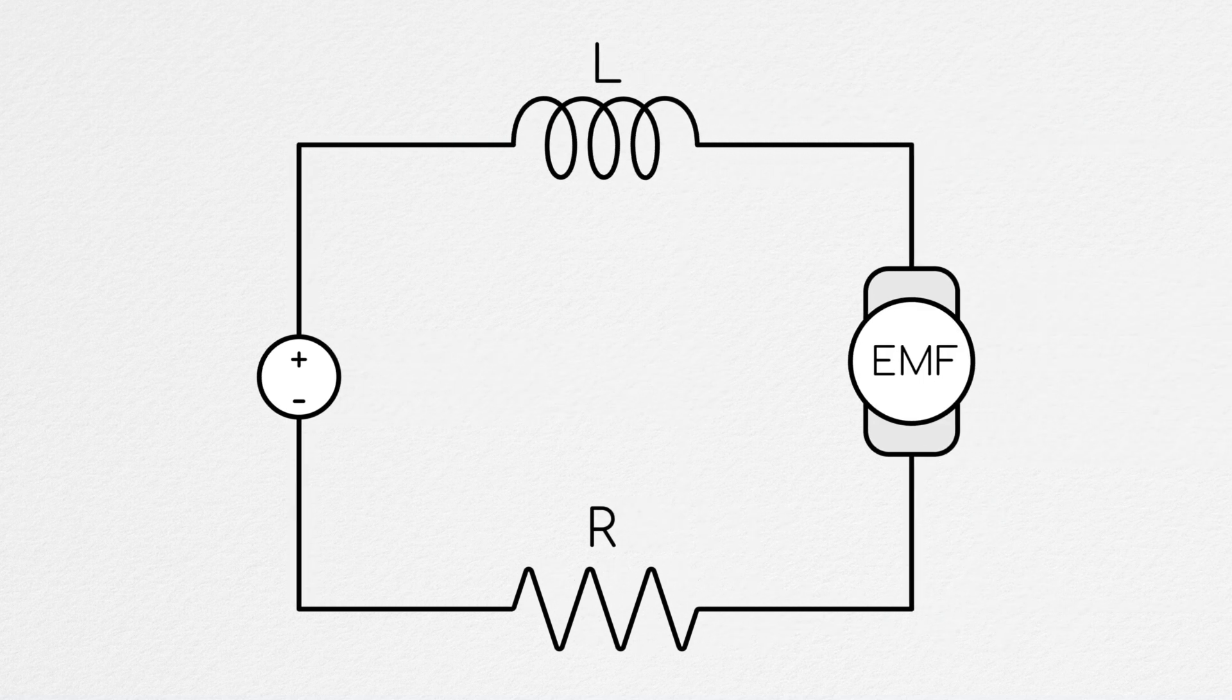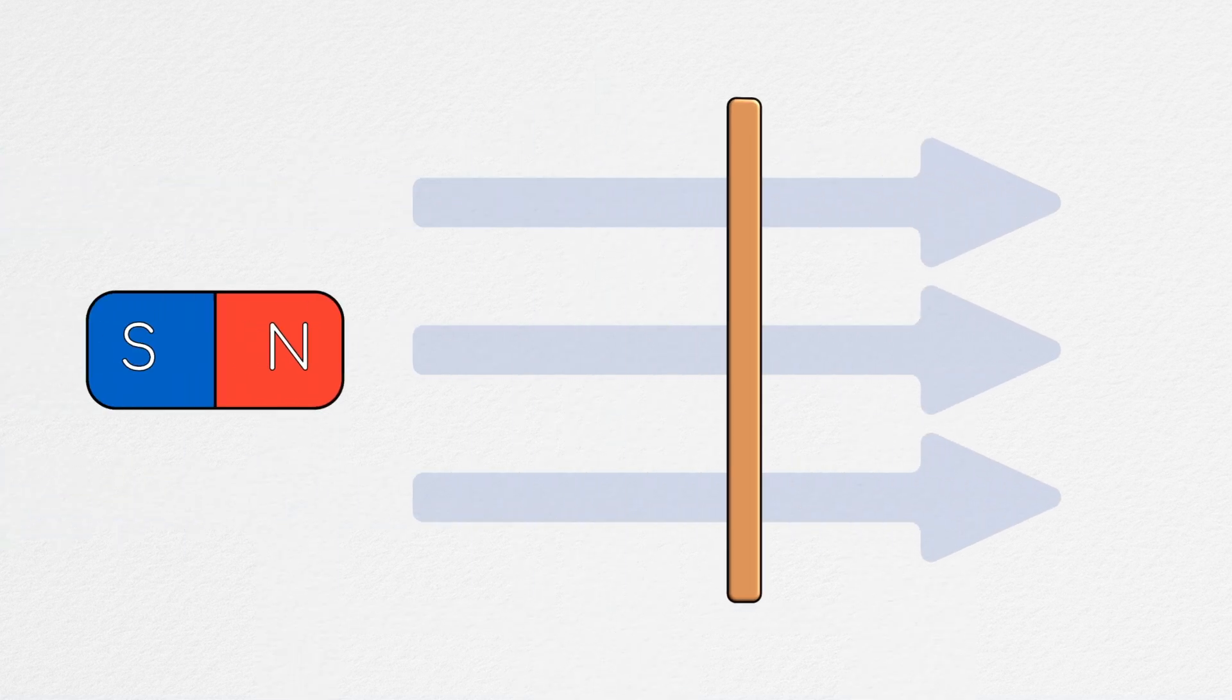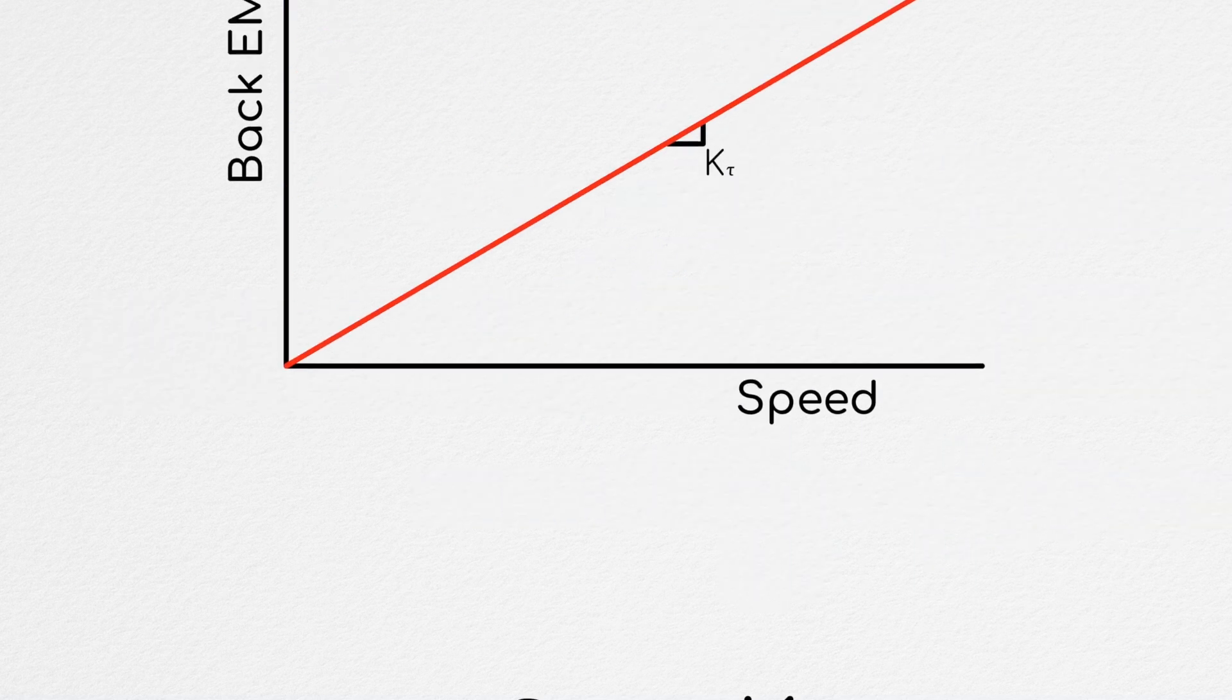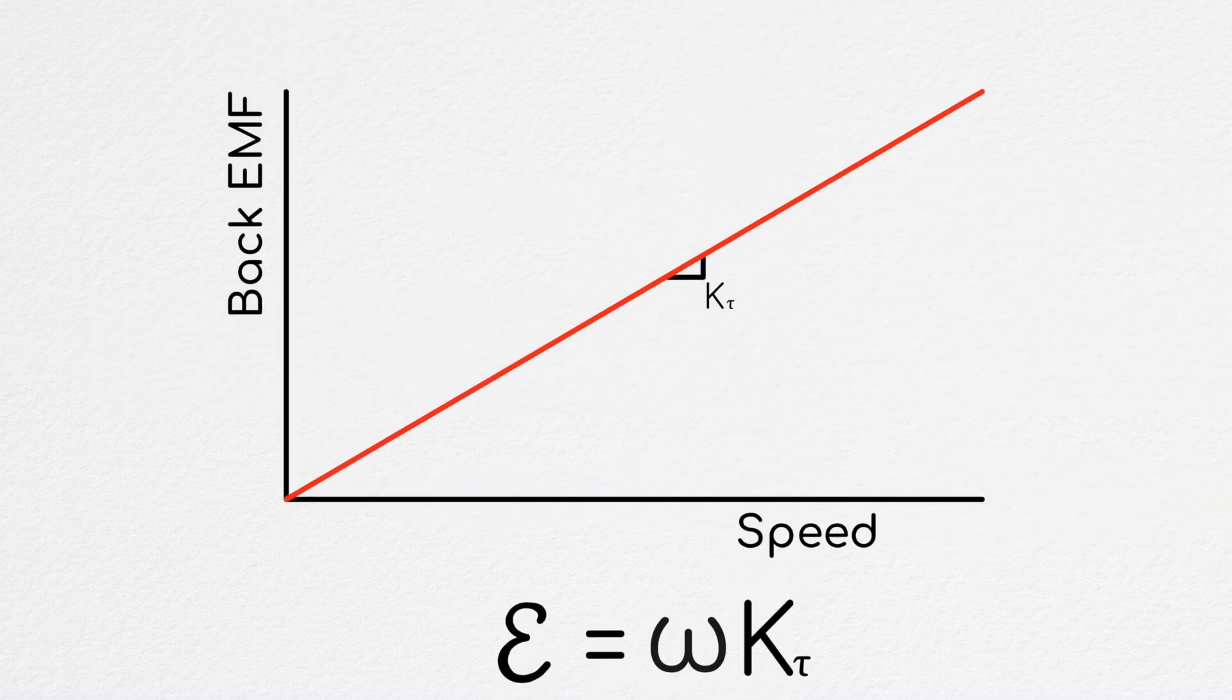In such situations, the key to converting mechanical power into the electrical domain is the back EMF generated by spinning the motor. As we've discussed a couple of times in this series, the back EMF is a voltage potential generated due to the motor coils rotating in its magnetic field. And it is approximately equal to the motor's torque constant multiplied by its angular velocity, assuming you have your units in check.